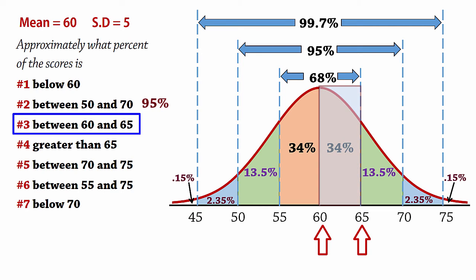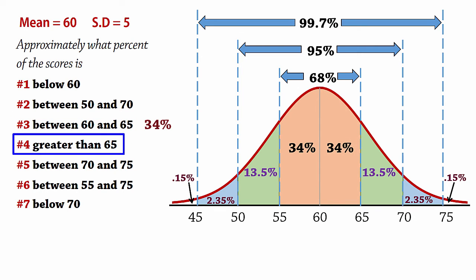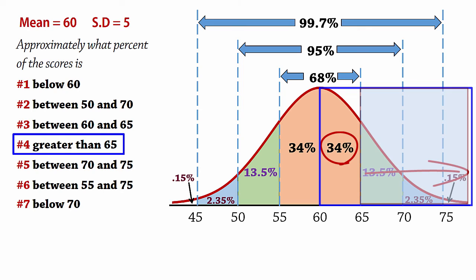For number 3, the area between 60 and 65 is simply 34%. For number 4, the percent greater than 65 is 50% minus 34%, which equals 16%.